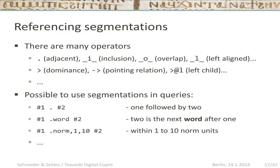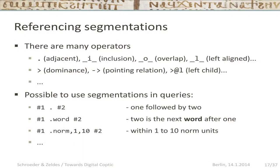You can also reference segmentations in searches. There are many operators: adjacency, inclusion (one thing contained within another), overlap, left-aligned (two things start at the same point), right-aligned (they end at the same point), graph-based operators like dominance, pointing relations for coreference, and so on. You can incorporate segmentations into queries — saying 'two is the next word after one,' with other non-word annotations in between not counting. Or 'within one to ten normalized units.' You can make any segmentation the basis of your query.